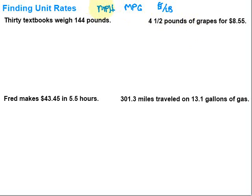Let's just look at those labels. An example of a speed would be like 50 miles per hour. That means we travel 50 miles per one hour. That's an example of a unit rate. So to find unit rates, I find it's helpful to figure out what you want the label to be. And if we do that, the label tells us how to set it up.